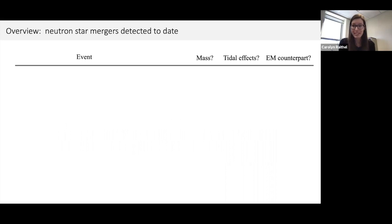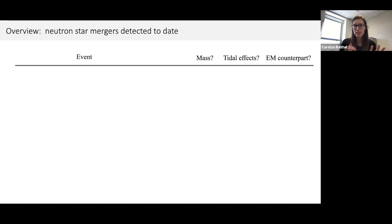Last fall, LIGO published its latest O3a catalog. With that publication, LIGO has now detected nearly 50 merger events, but only a very small fraction contain a neutron star. The primary criterion LIGO uses to determine if something is a neutron star merger versus a black hole merger is based on component masses — if the mass is below somewhere between two and three solar masses, it's likely a neutron star. The most conclusive evidence is a tidal signature in the waveform.